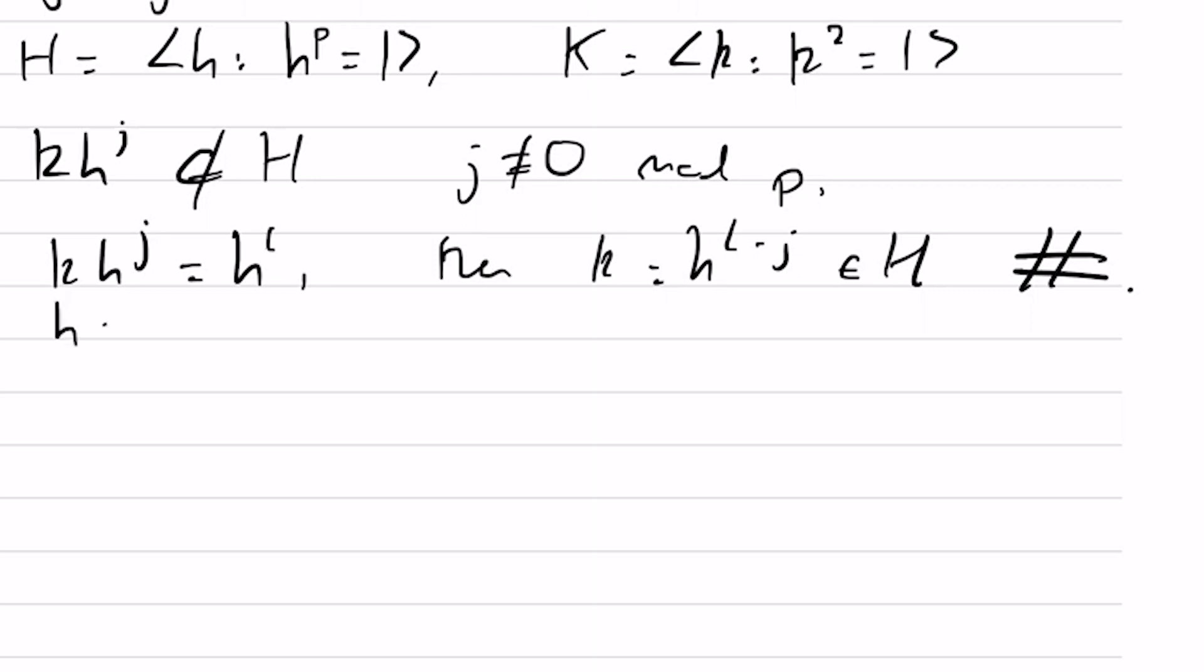Similarly, kh to the j is not in K if j is not 0. Hence, the 2p elements of G are the identity, h up to h to the p minus 1, k, kh, all the way up to kh to the p minus 1.